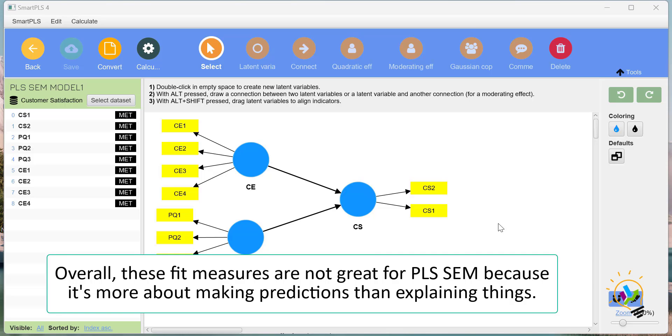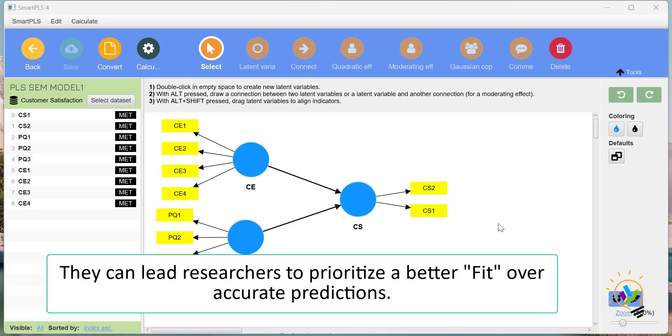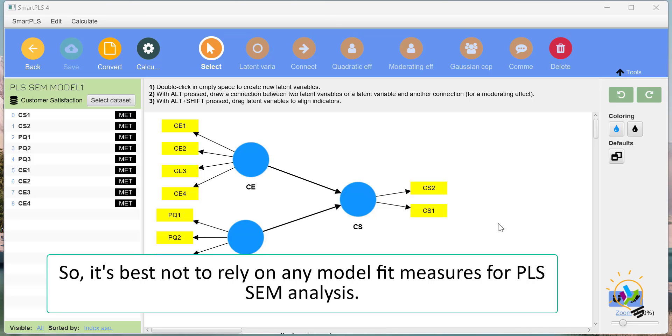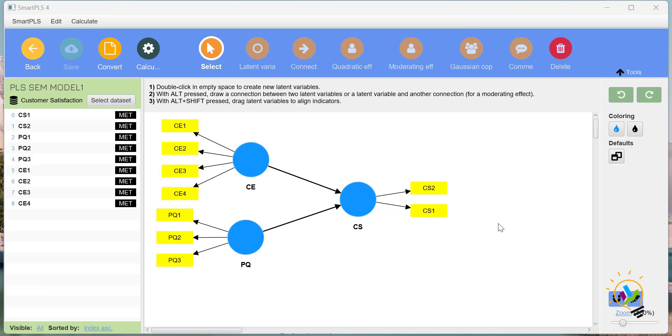Because PLS-SEM is more about making predictions than explaining things, these measures can lead researchers to prioritize better fit over accurate predictions. So it's best not to rely on any model fit measure for PLS-SEM analysis.